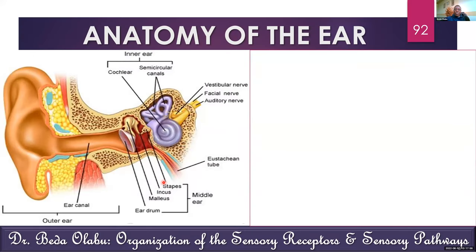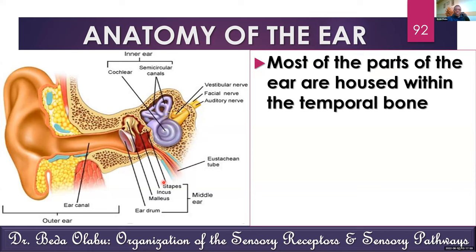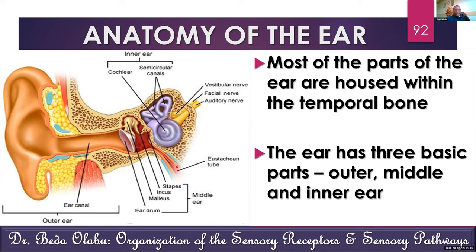Let's start by talking about anatomy of the ear. In terms of where the ear is found, most parts of the ear are housed by the temporal bone — the bone near the ear. We can describe the ear as having three anatomical parts: the outer ear, the middle ear, and the inner ear.